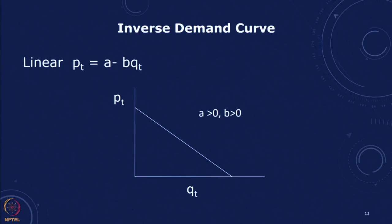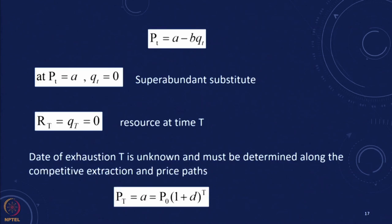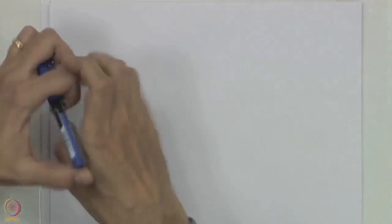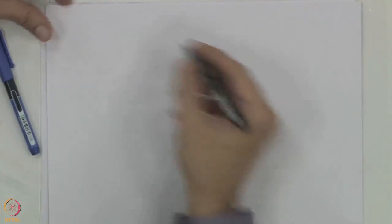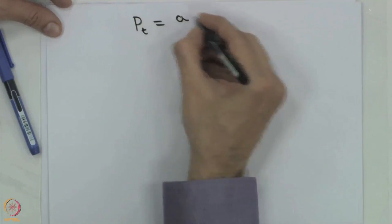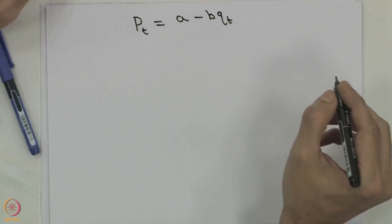We will take that result and derive, for a given known demand curve, how long the resource will last. We consider a competitive mining industry facing a linear inverse demand curve. We first start with a linear inverse demand curve and then take a constant elasticity demand curve to derive how much time a given resource will last in a mine. Let Pt = A minus B·Qt as the linear inverse demand curve.